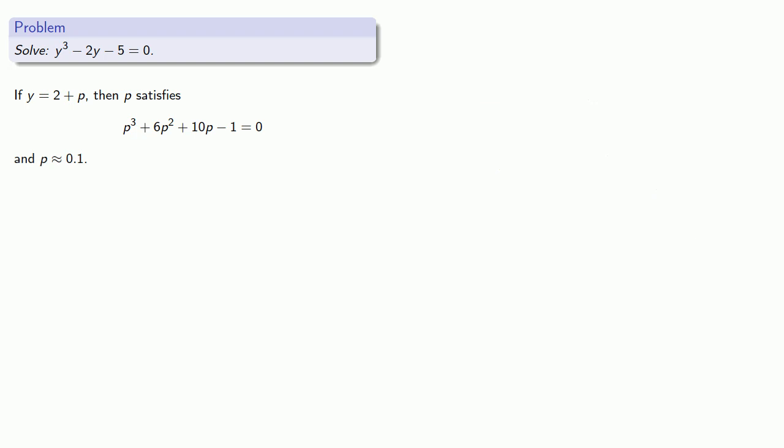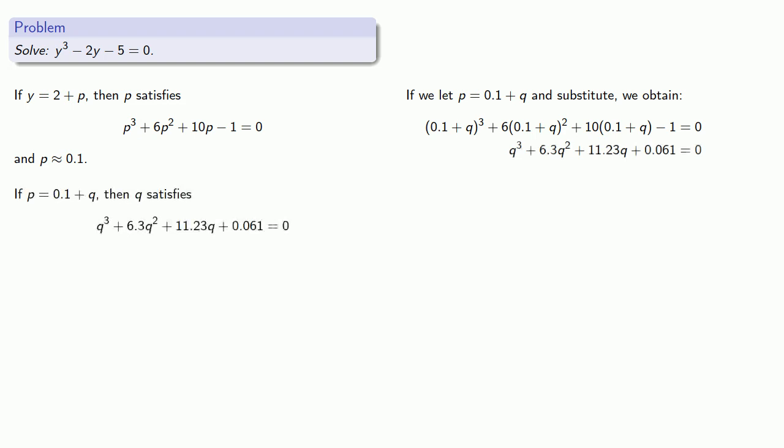Well, what we've done once we can do again. p is approximately 0.1, so if we let p equal 0.1 plus q, where q is an even smaller number, and substitute, we obtain a new equation in q. But since q is small, q cubed and 6.3q squared are even smaller, so we can ignore those terms and get an approximate linear equation which gives us an approximate value for q.